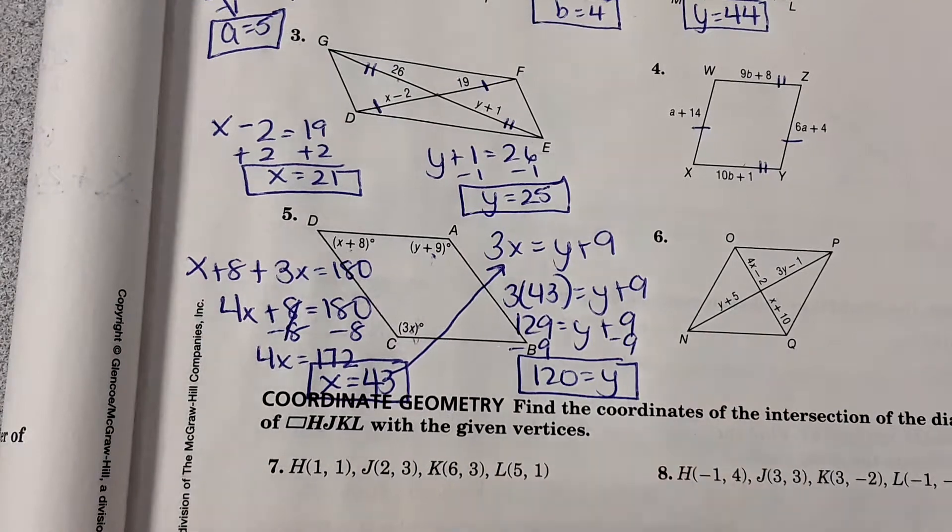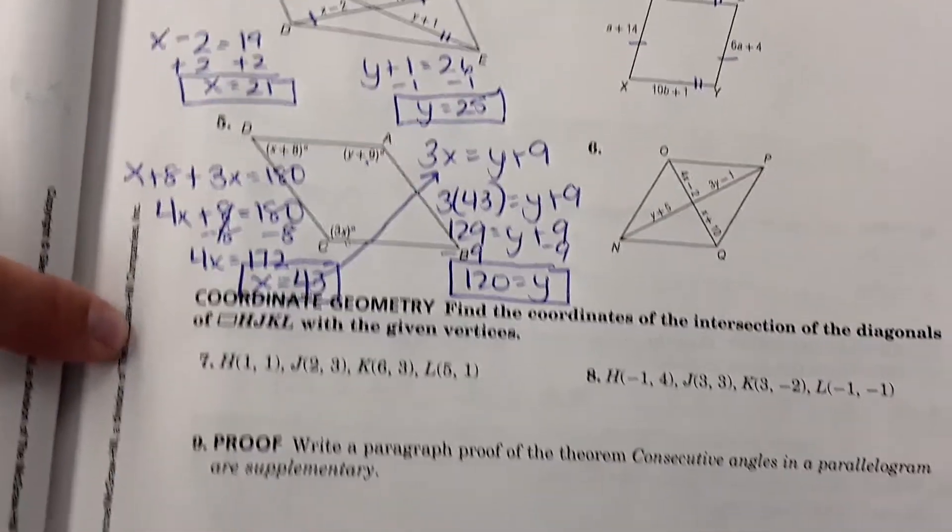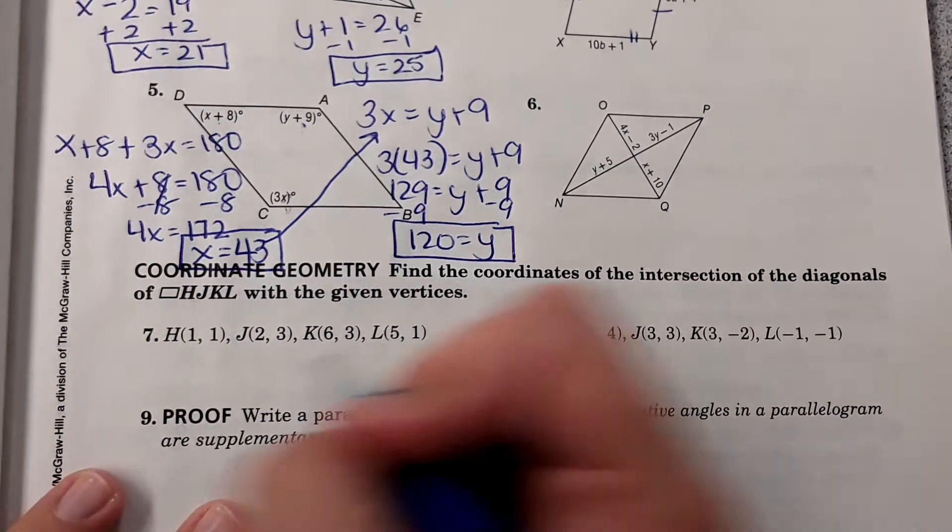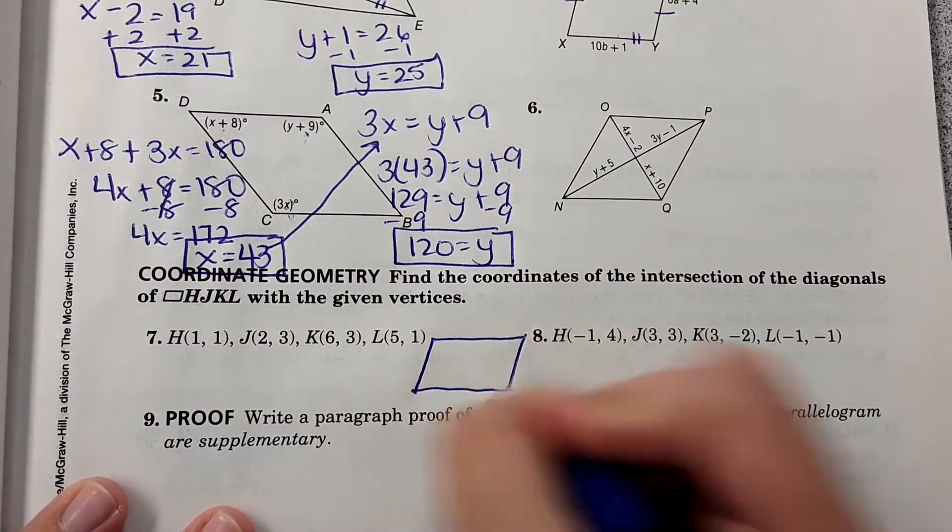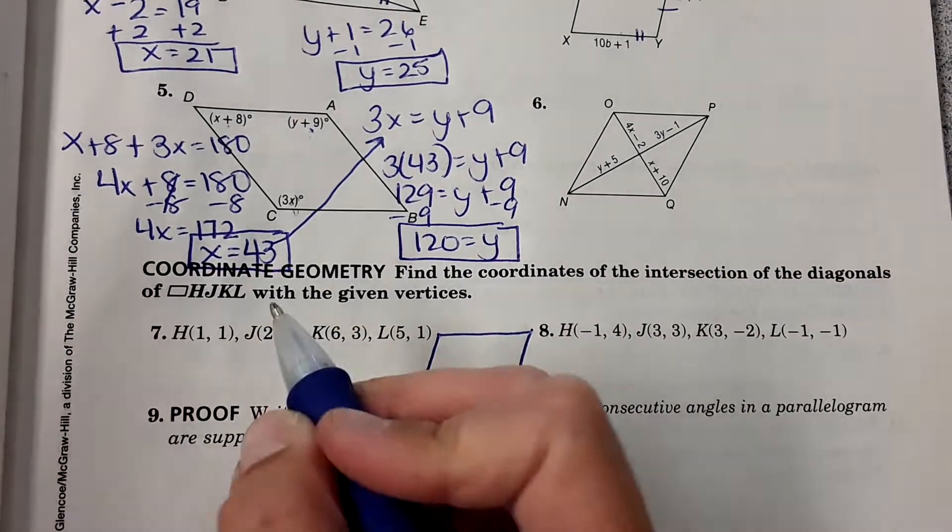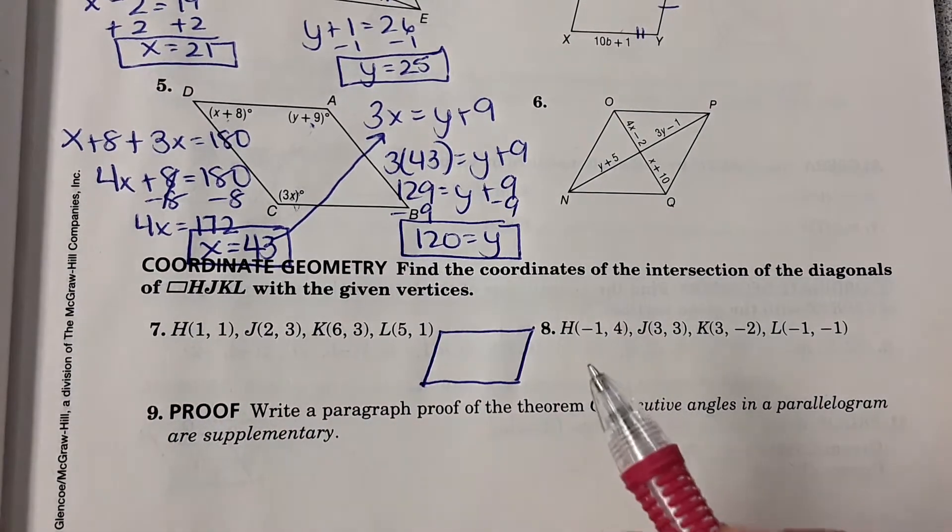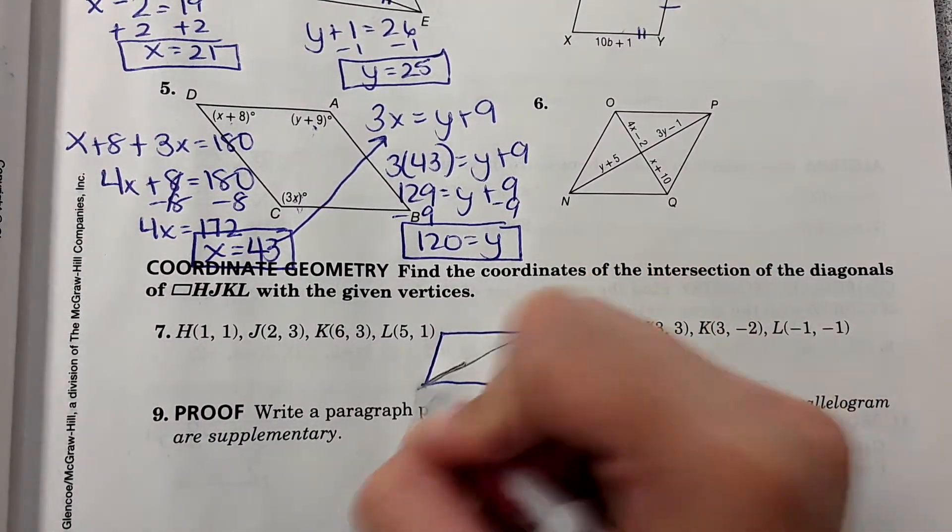Number six is just like number three, so we already have an example of that. Seven and eight: coordinate geometry. I always lose your attention with these because they take a little bit to graph all the points. If you get these on the homework, here's what you would do: you'd graph the points, so it would make a parallelogram. It says find the coordinates of the intersection of the diagonals of parallelogram HJKL with the given vertices. So you'd plot these points, which would give you a parallelogram, and then it wants you to find the intersection of the diagonals, so your diagonals would look like this.